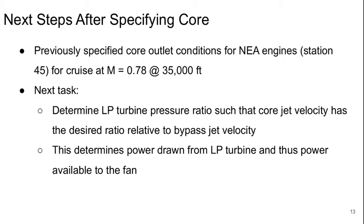So we previously specified the core for our new efficient aircraft engines. So basically we have the outlet conditions at station 45 at cruise. So our next task is to determine the low pressure turbine pressure ratio such that the core jet velocity has the desired ratio to the bypass jet velocity. That'll determine how much power gets drawn from the low pressure turbine, and thus how much power is available to the fan.